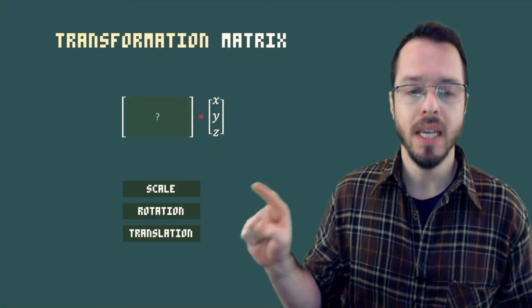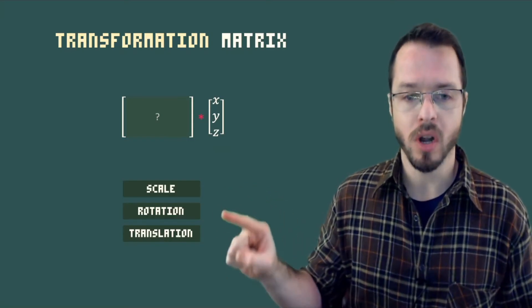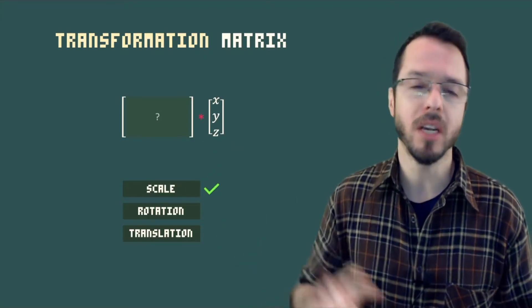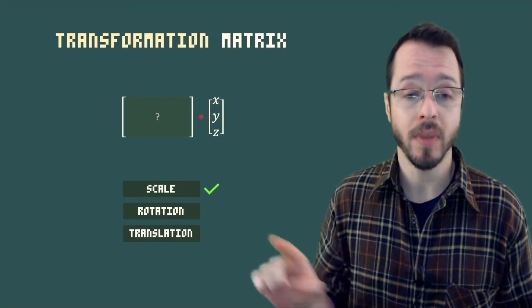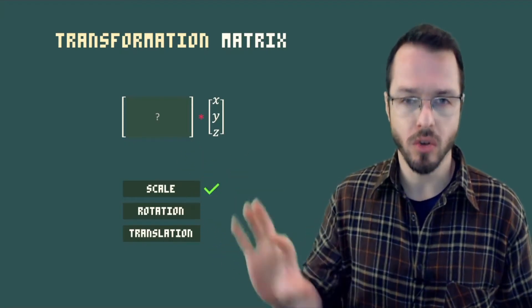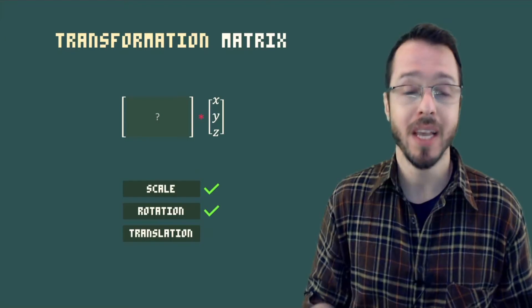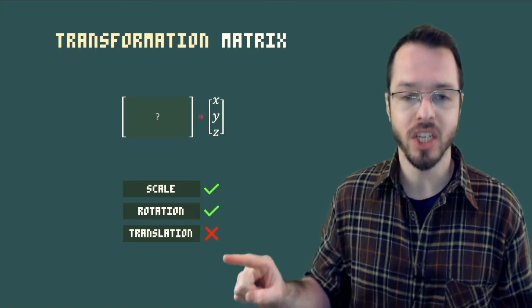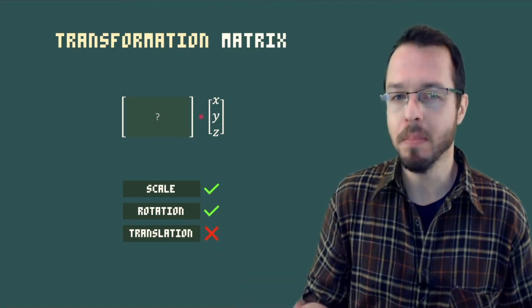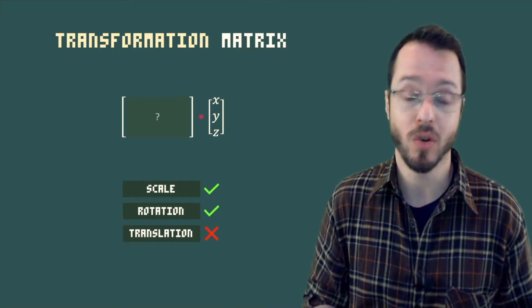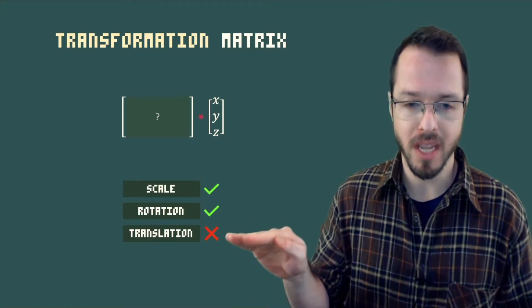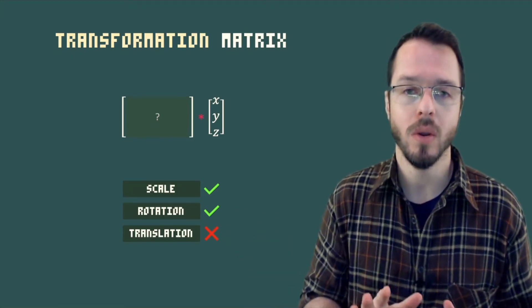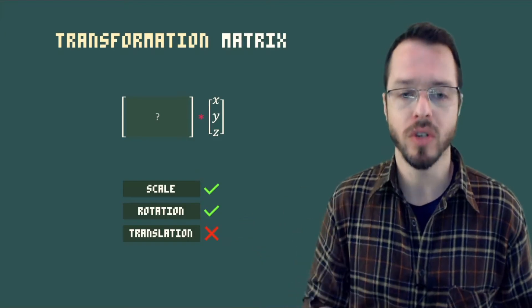Here's a spoiler: if we're talking about these three important transformations — scale, rotation, and translation — scale could use a 3x3 matrix, that would be fine. Rotation as well, a 3x3 matrix would be okay. The only issue is translation — translation is the weird one out. We cannot simply use a 3x3 matrix to represent translation. That's the one I'm going to zoom in on and explain why translation is a little different.